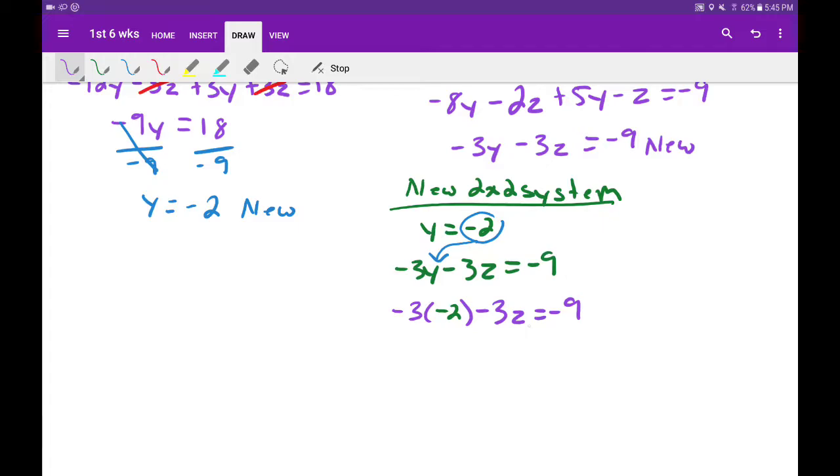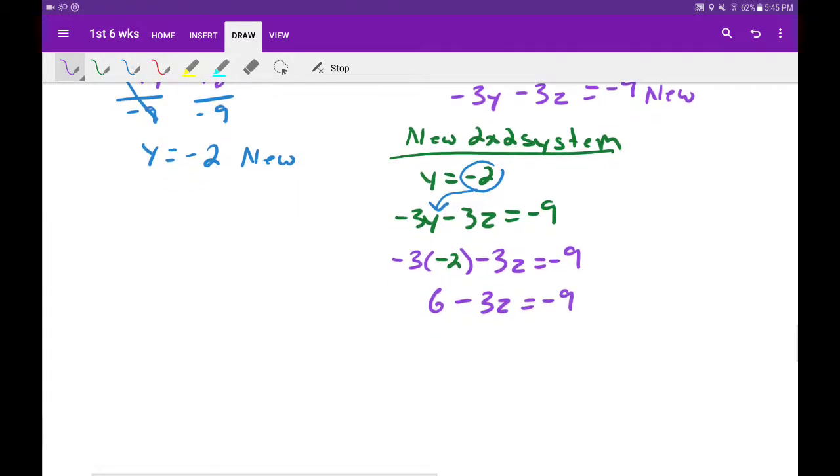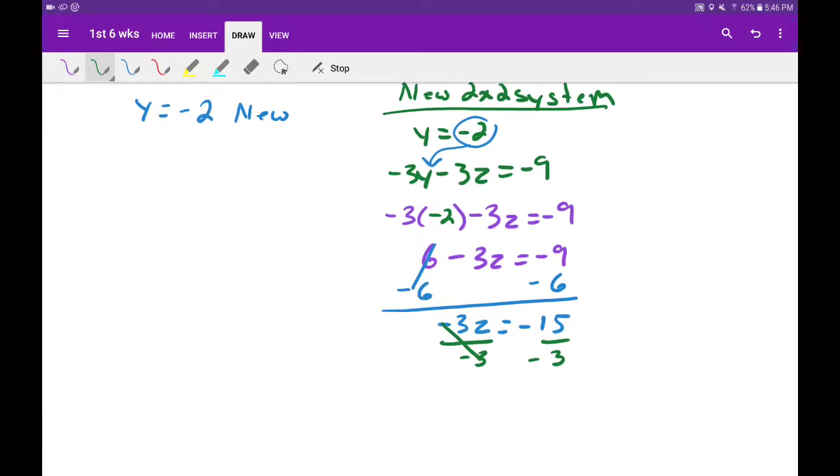I'm going to be able to solve for z from here. Negative 3 times negative 2 is positive 6 minus 3z equals negative 9. Let's subtract 6 from both sides. Cancel. Negative 3z equals negative 15. Divide negative 3 on both sides and we're going to get z equal to positive 5.